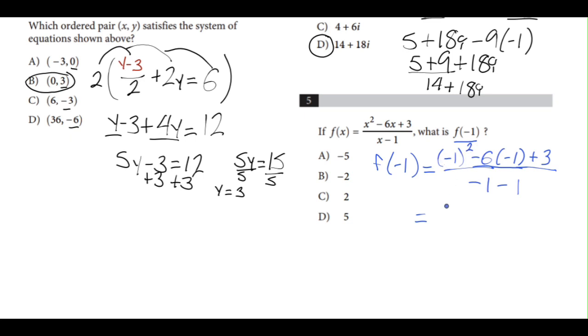Negative 1 squared is positive 1. Negative 6 times negative 1 is positive 6 plus 3 over negative 1 minus 1 is negative 2. 1 plus 6 plus 3 is 10 over negative 2 is negative 5, which will be answer choice A.